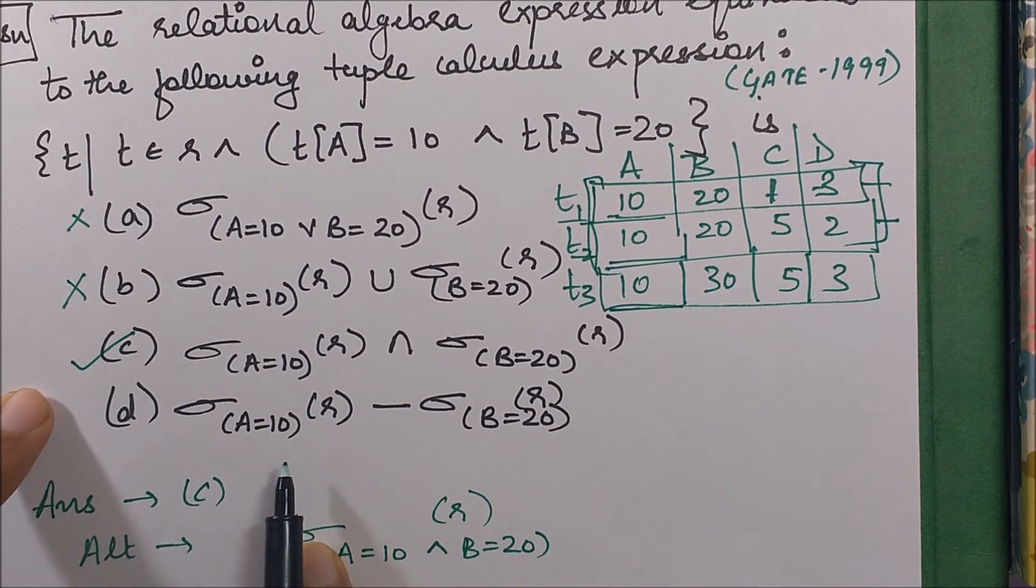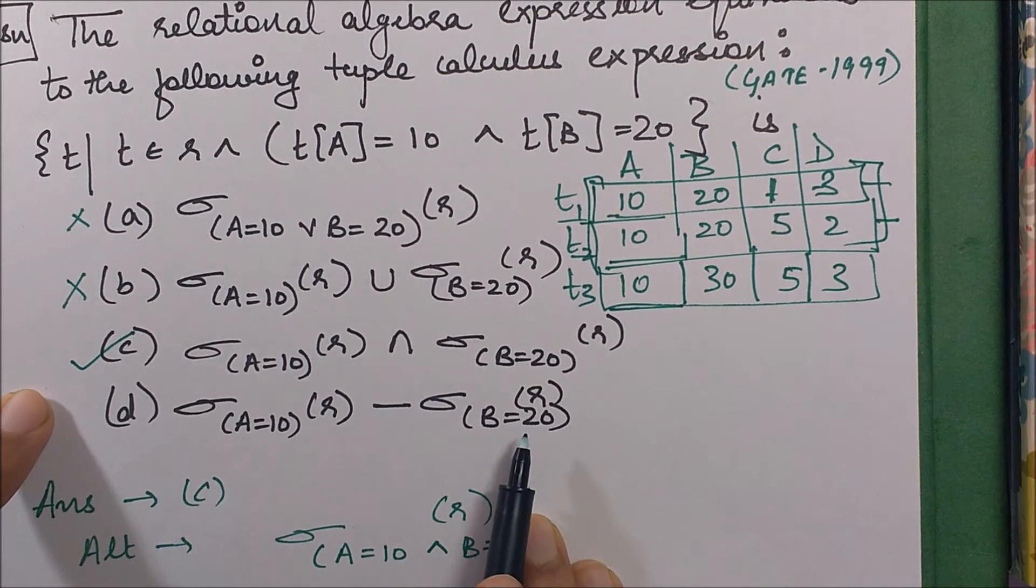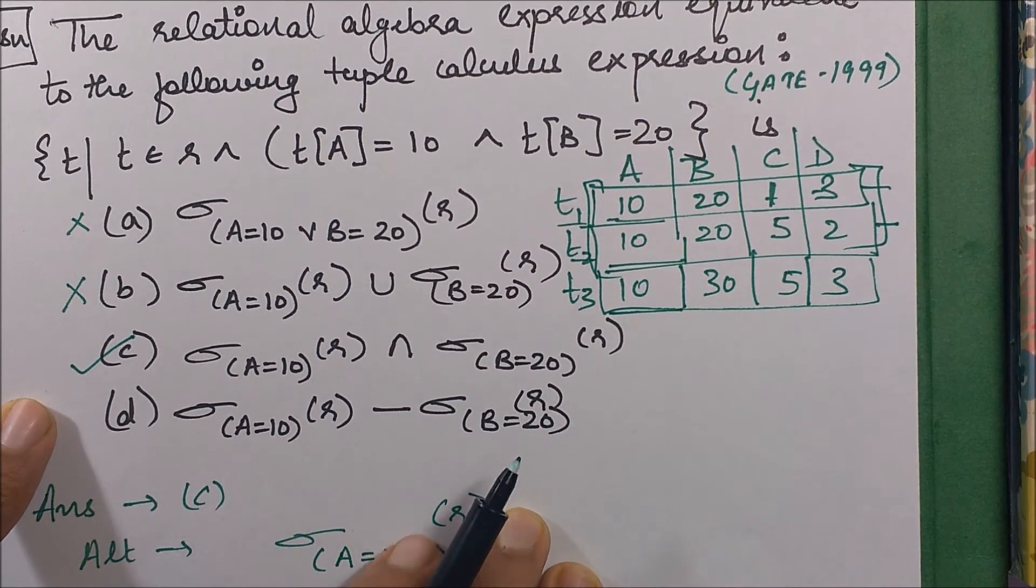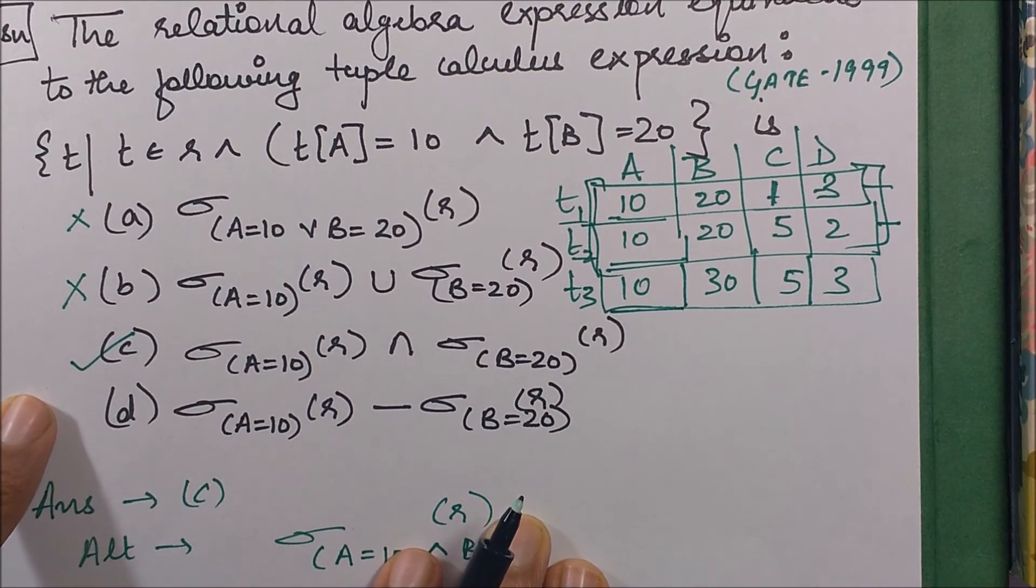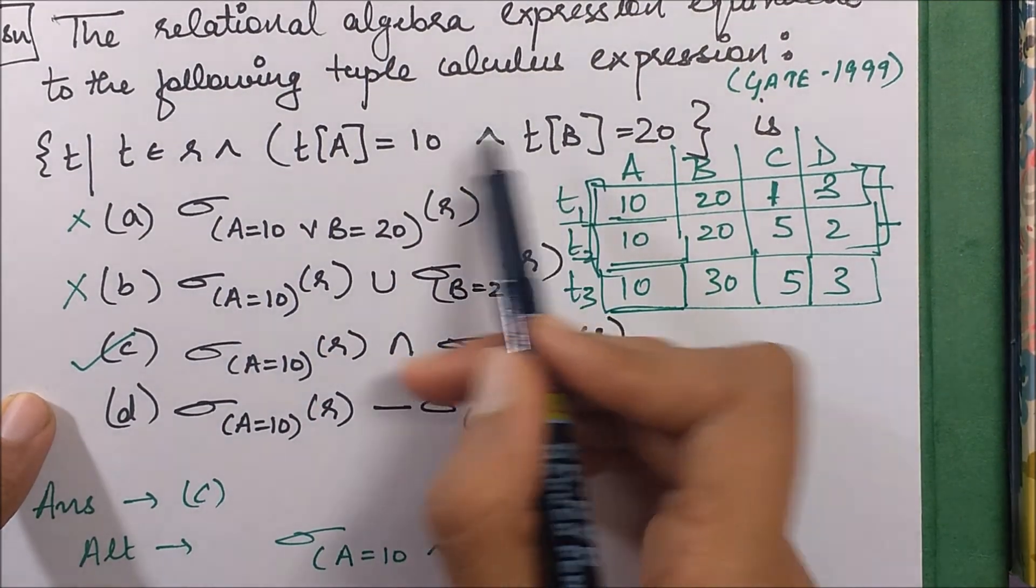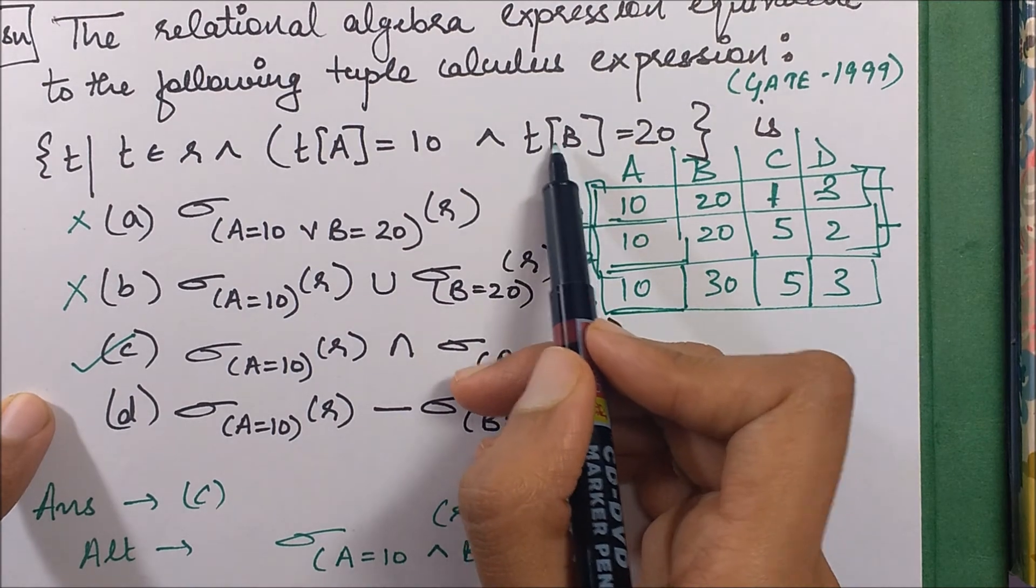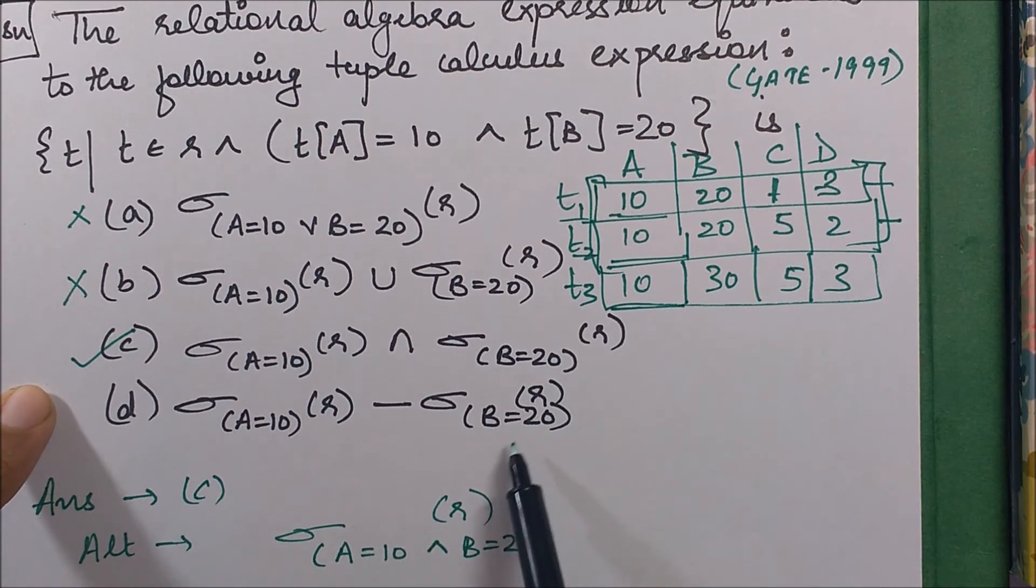Now it says a equals 10 minus b equals 20. This is a wrong answer indeed. Why? Because I wanted the combination where both these conditions are being satisfied. Now this is subtracting some tuples.